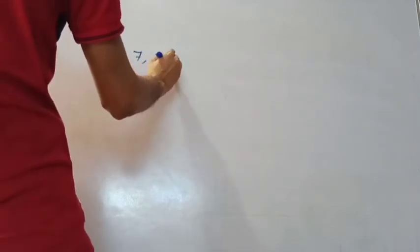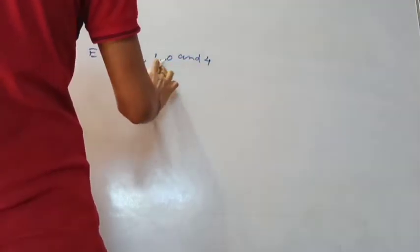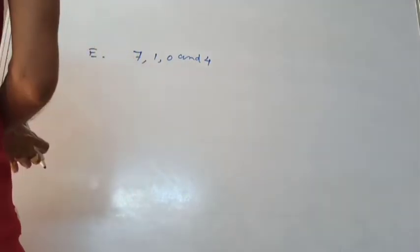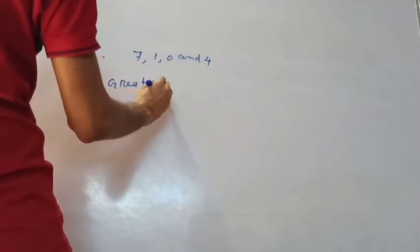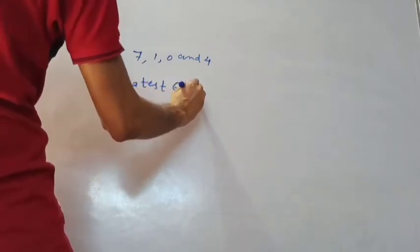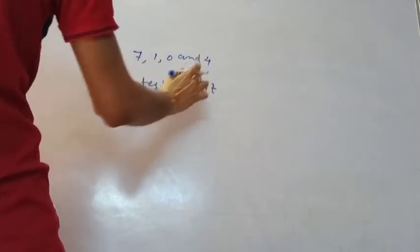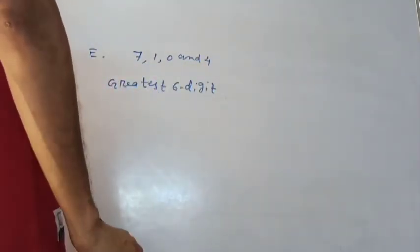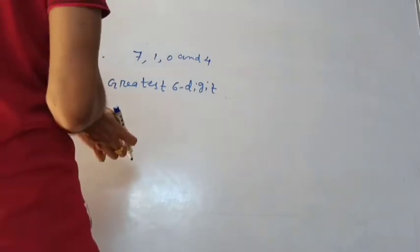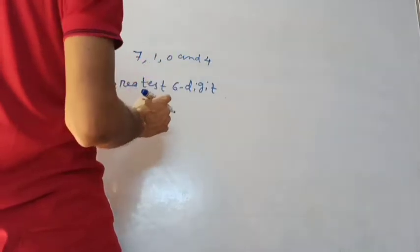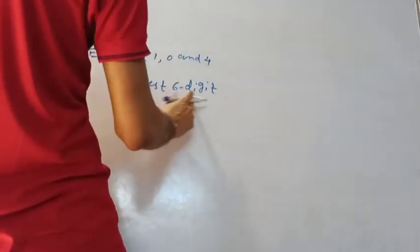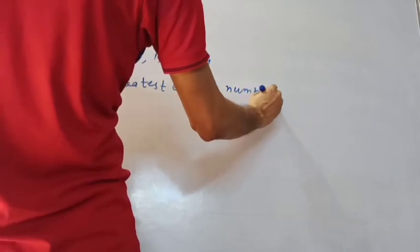Next, question E: make the greatest and smallest 6-digit number using the digits 7, 1, 0, and 4, where digits can be repeated. We have only 4 digits but need a 6-digit number. For the greatest 6-digit number: the greatest digit among 7, 1, 0, 4 is 7, and the smallest is 0. Since digits can be repeated, we repeat 7.